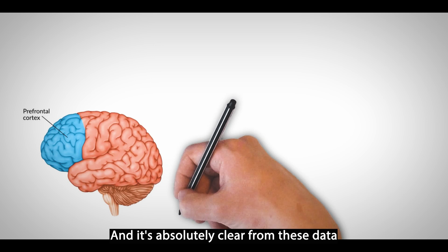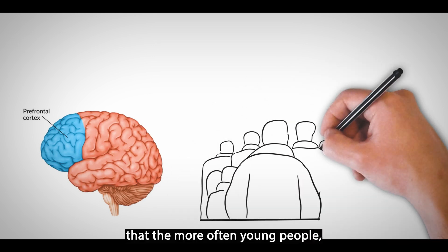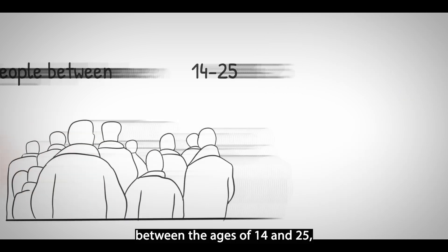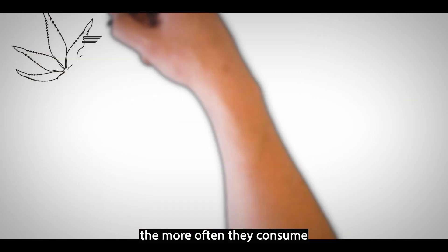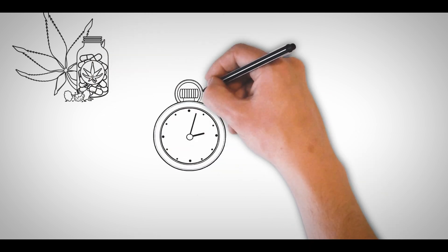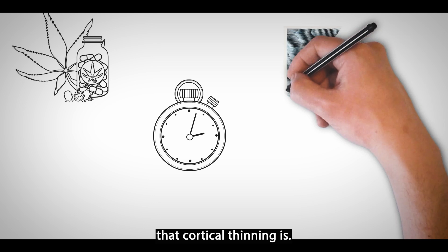It's absolutely clear from these data that the more often young people, meaning individuals between the age of 14 and 25, the more often they consume or smoke or vape cannabis, the faster and the more extreme that cortical thinning is.